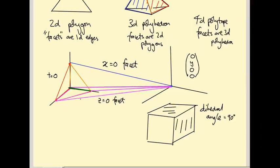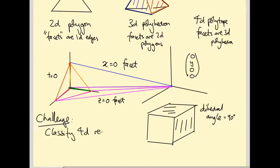To summarize the challenge: classify four-dimensional regular polytopes by enumerating the possible facets (which must be Platonic solids) and the number of facets that could fit around each edge, using the dihedral angle condition. There should be a relatively small finite number of possibilities.